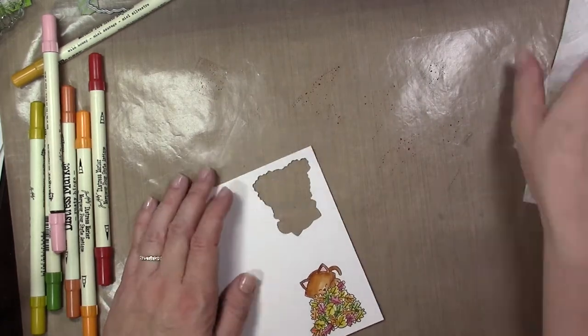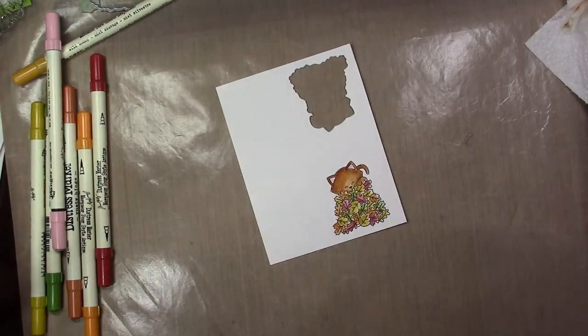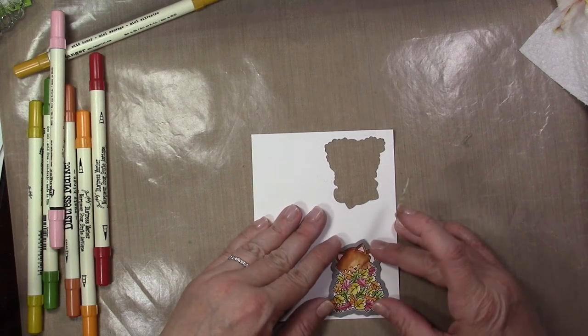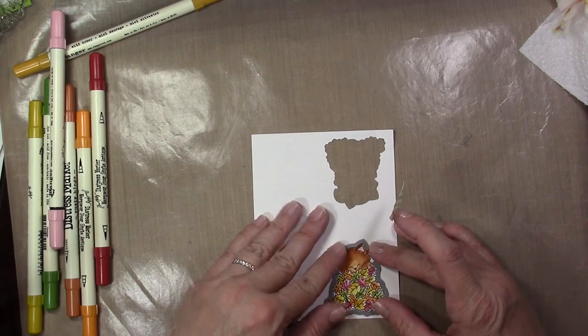And once I've got my image all colored, I'm going to go ahead and heat set that with my heat tool to make sure everything is nice and dry. And then I'm going to use the coordinating die for this stamp set to go ahead and run that through my big shot and cut it out.